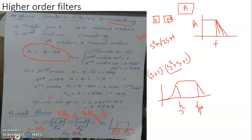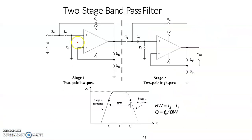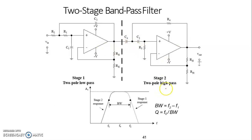Now let's consider cascading. A second-order bandpass filter can be constructed by cascading a second-order low pass filter with a second-order high pass filter. The input is given as shown here to a two-pole low pass filter having a characteristic corner frequency f2, and the output of this stage is injected to the input of a two-pole high pass filter.